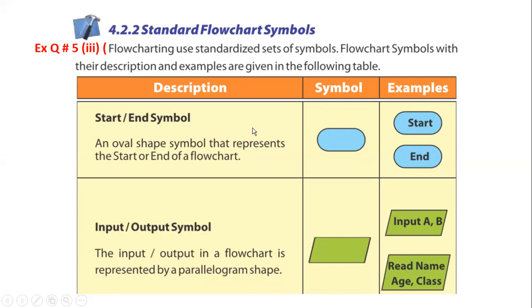First we have the Start/End symbol. This symbol is used to indicate the start or end of any flowchart. The shape used for start and end is the oval shape. An oval shape symbol represents the start or end of a flowchart. The Start/End symbol is also known as the Terminal Symbol.